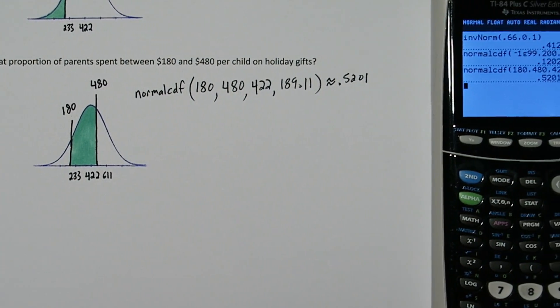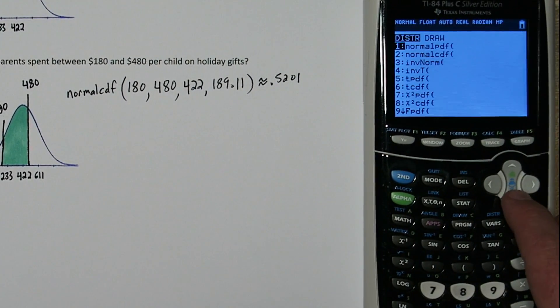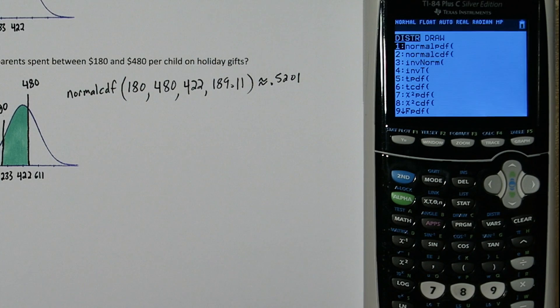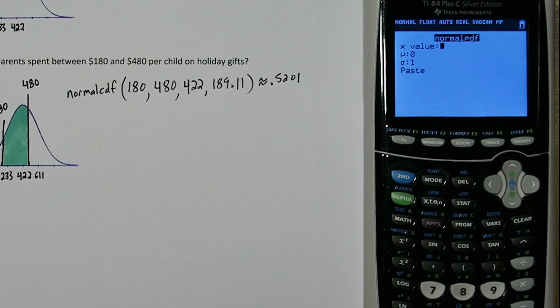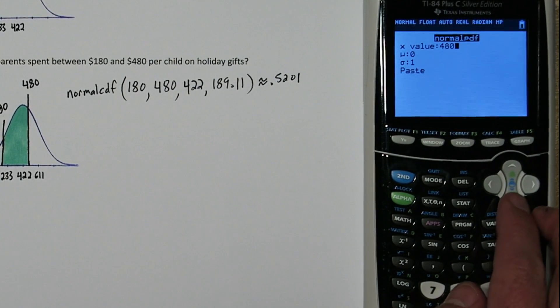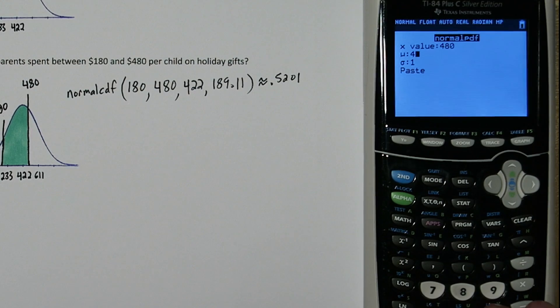One more thing before we go. There's another function in the distribution menu called normal PDF. So let's click it. Right here it says what x value do you want. I'm going to type in 480, the upper end of our cutoff in problem C. And we'll put our mean and standard deviation in.